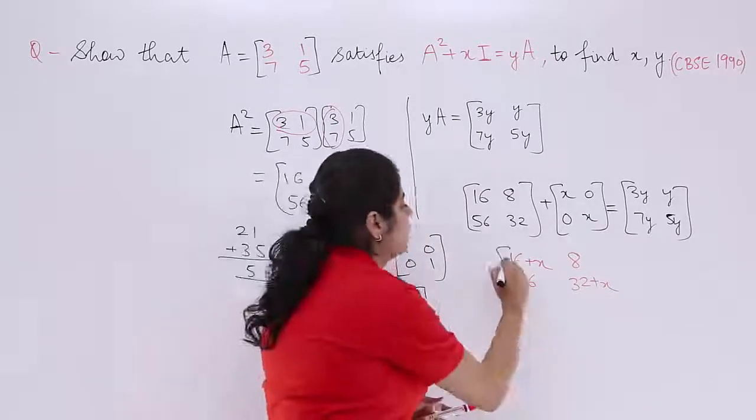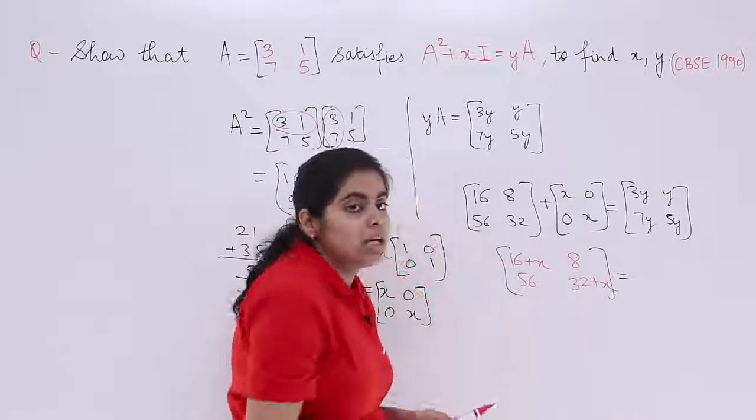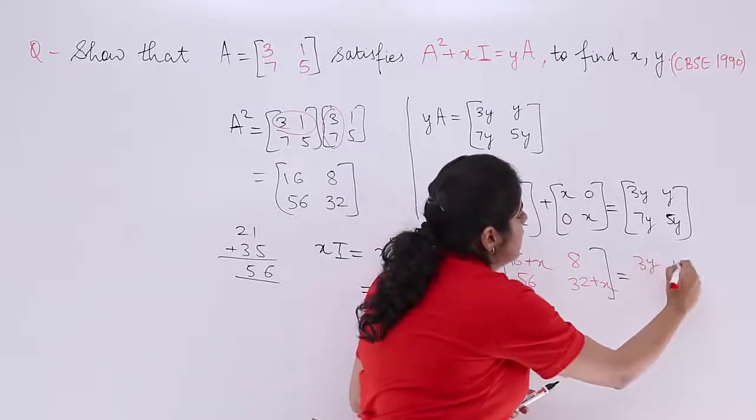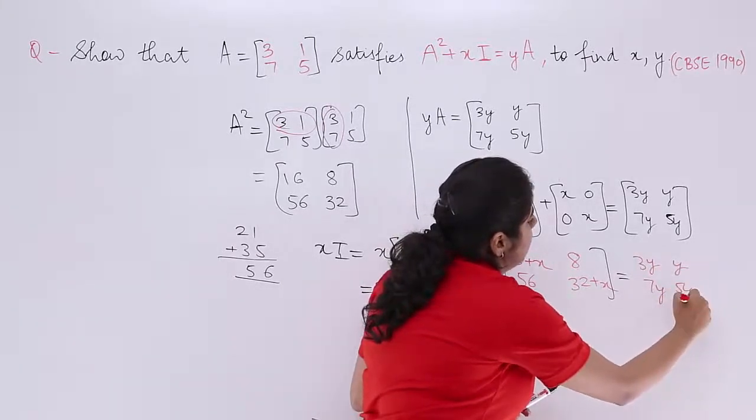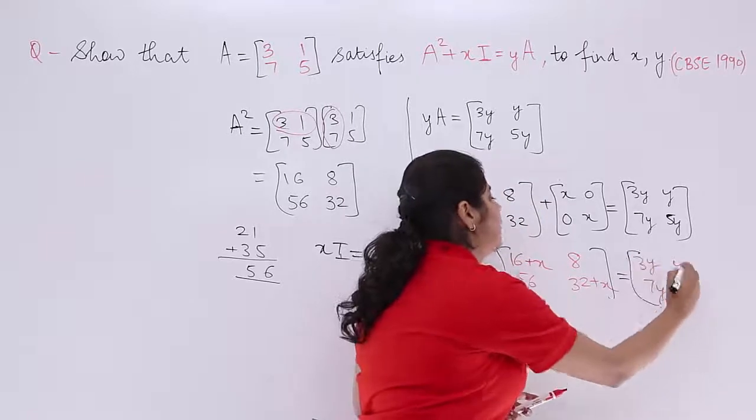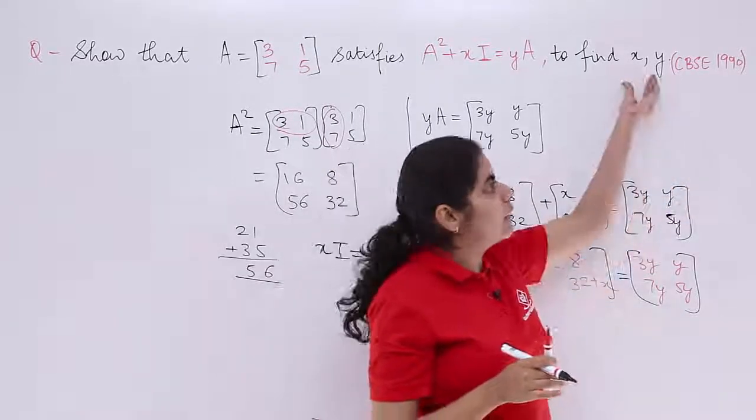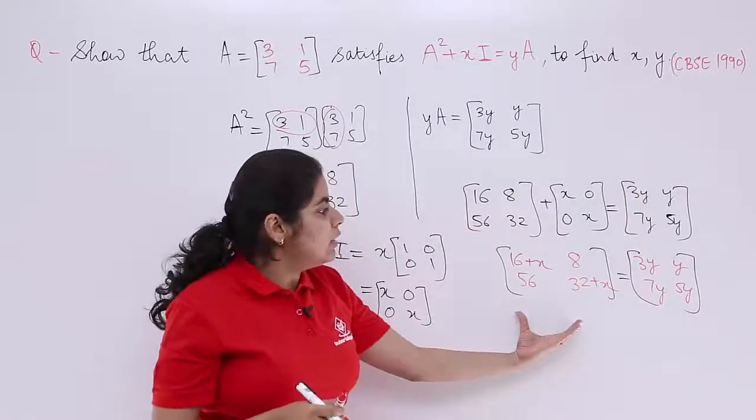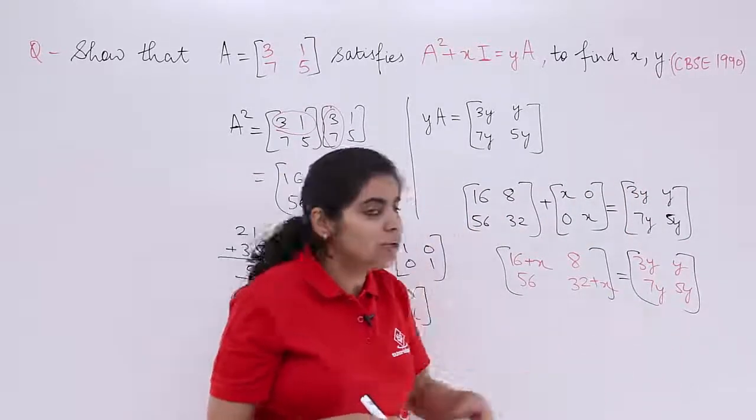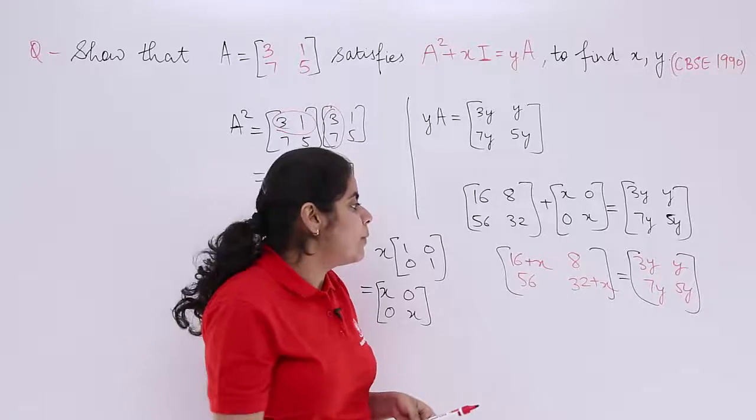And here what you have, it is a matrix. Here you have again 3Y, Y, 7Y, 5Y in the matrix form. You are supposed to find what in the equation? Find X, Y. Easily 4 values here, 4 values here. Simply comparison position by position.